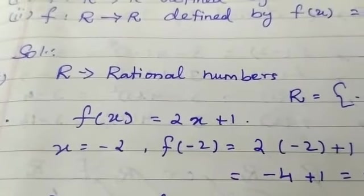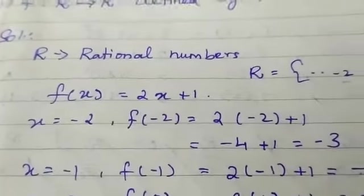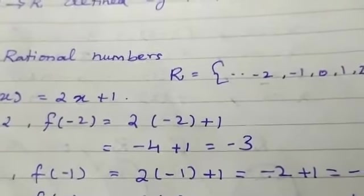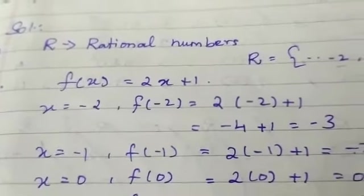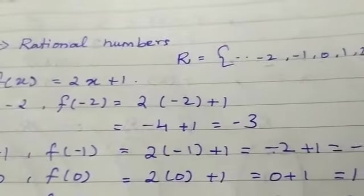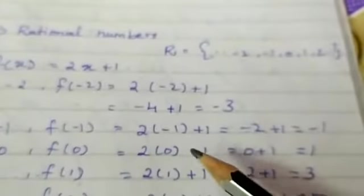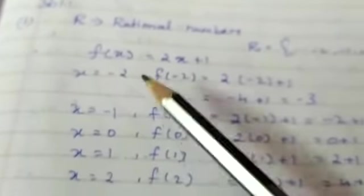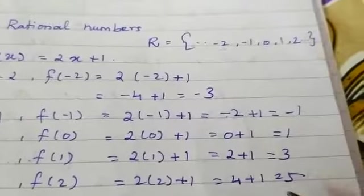For f(x) = 2x + 1, substituting x = -2 gives f(-2) = 2(-2) + 1 = -3. Substituting x = -1 gives f(-1) = 2(-1) + 1 = -1. Substituting x = 0 gives f(0) = 2(0) + 1 = 1. Substituting x = 1 gives f(1) = 2(1) + 1 = 3. Substituting x = 2 gives f(2) = 2(2) + 1 = 5.